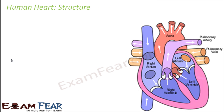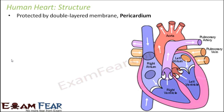Let us look at the structure of the heart in more detail. The heart is well protected by a two-layered membrane which is called the pericardium. You can see this membrane — the outside boundary of the heart is covered by this membrane called pericardium.